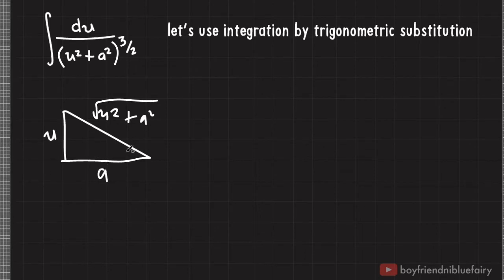Now, based on the figure, this triangle has an angle of theta at this corner. Then, u equals a tangent theta.